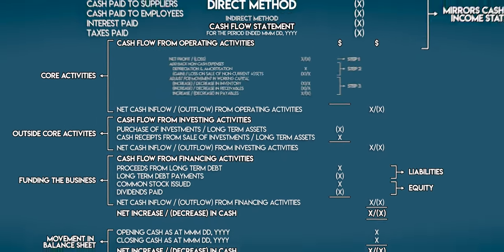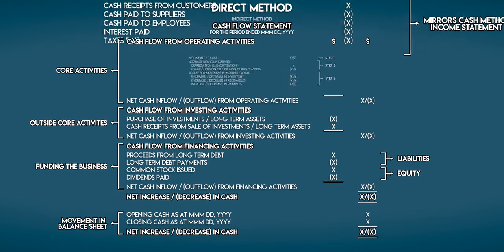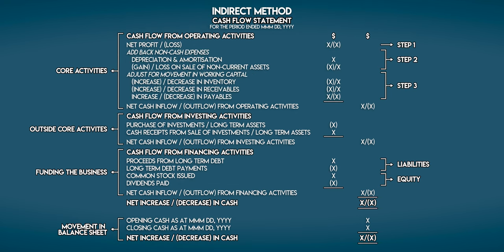Now you're probably thinking that the direct method sounds a lot easier — why don't we just use that? You're right, it is easier to read, but it's actually harder for accountants to prepare so we don't use it as much. The indirect method is much easier to work out because we can find a lot of these numbers in the income statement and the balance sheet, as you'll see in this next example.